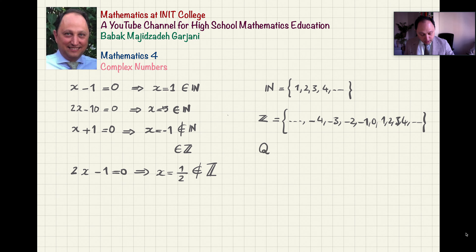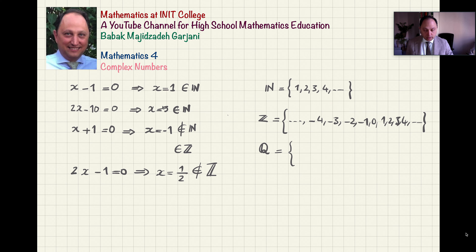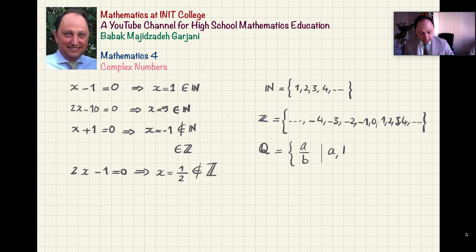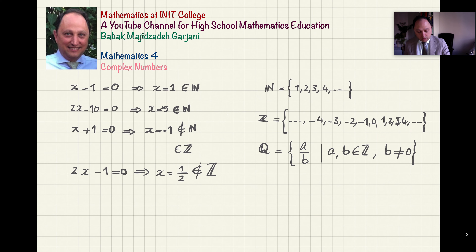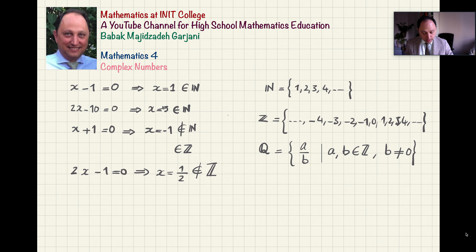But the story continues. If we solve another simple equation, the answer is x equals 1/2, which is not in Z. So Z is also not enough. This motivated people to extend to the set of rational numbers Q. A rational number is a fraction a over b, where numerator and denominator belong to Z and b is not equal to 0. So 1/2 is in Q, solving the problem.